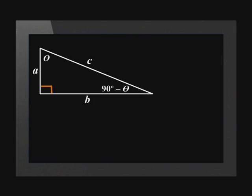Let's take a step backwards and show how these co-functions work. Here is a right angle triangle. Theta is indicated, and so is the other angle which is complementary to theta and therefore has a value of 90 degrees minus theta. Sine of theta is equal to b over c. Cos of 90 minus theta is also equal to b over c.